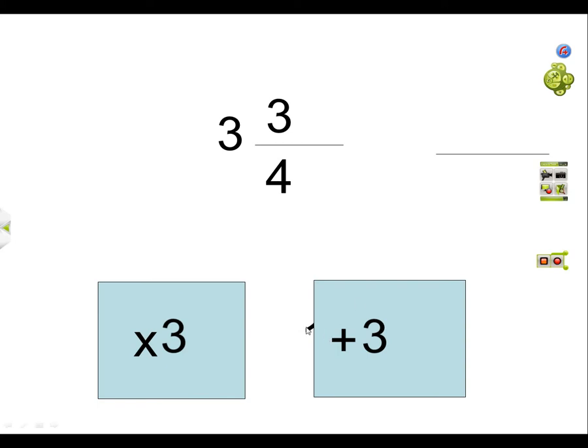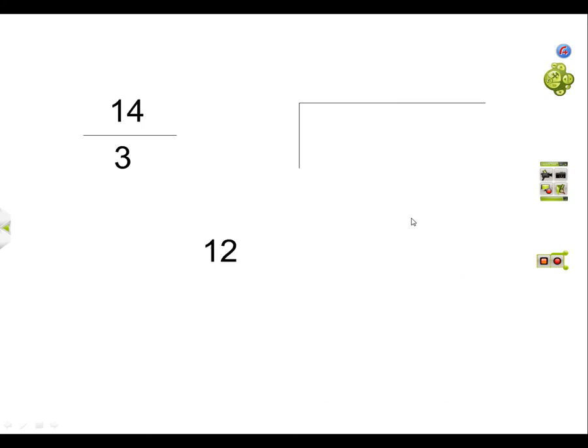You can still kind of peek. 12 plus 3 is 15. And where does the denominator come from? It stays the same.